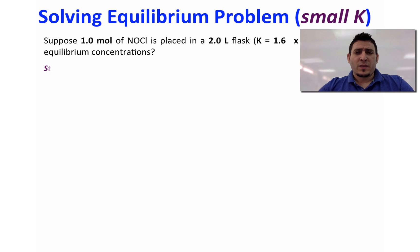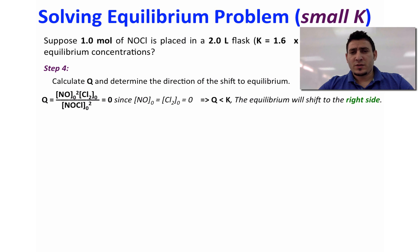So in step 4 we will find the reaction quotient Q, and again here Q is listed the same way as the equilibrium constant expression using the initial concentrations. Now since the initial concentrations of NO and Cl2 are zero, Q is going to be equal to zero, which is going to be less than K, and therefore the equilibrium will shift to the right side.